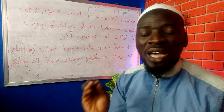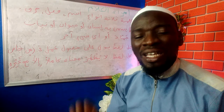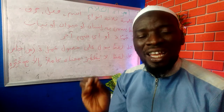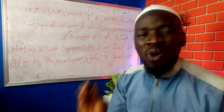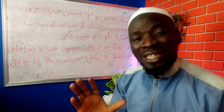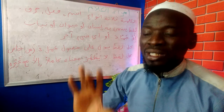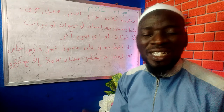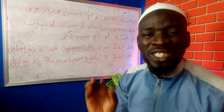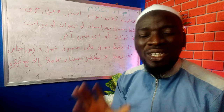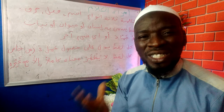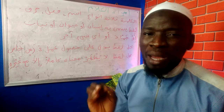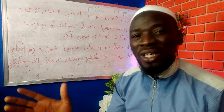Al-kalamu yankasim ila thalathati anwa' — ala thalathati al-ajza': al-ismu wal-fi'ilu wal-harfu. So the parts of sentences in Arabic are three. Basically, you have the ismu, which is a noun. Then you have the fi'ilun, which is a verb. Then you have the harfu, which is the particle. And that particle can come in many ways.